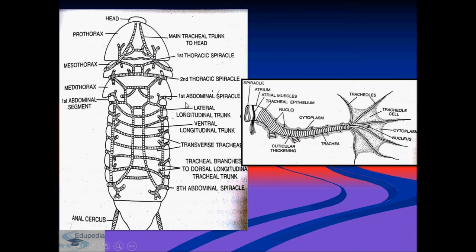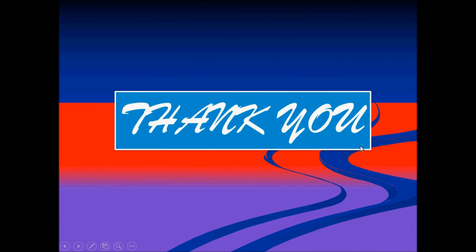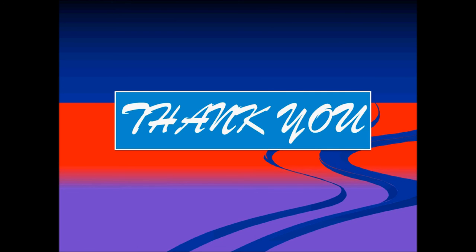There are two thoracic spiracles — the first and second — and in the abdominal segment, one abdominal spiracle is present. Each spiracle has an atrium with atrial muscles and cuticular thickening, then divides into tracheoles with cytoplasm and a nucleus. This concludes the topics of the circulatory system, digestive system, and respiratory system of cockroaches.